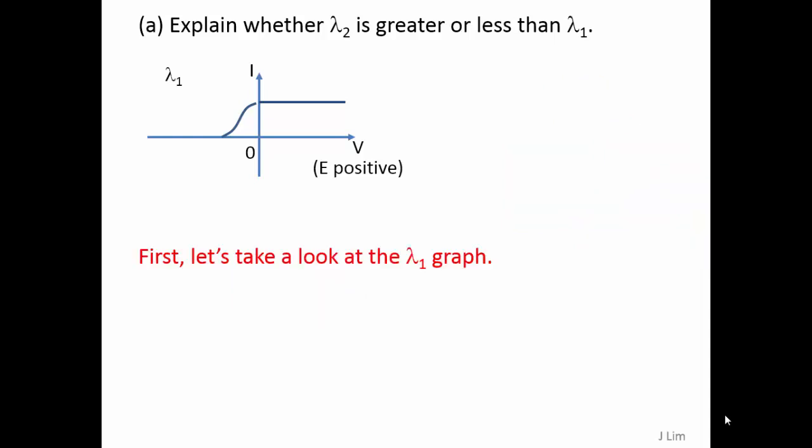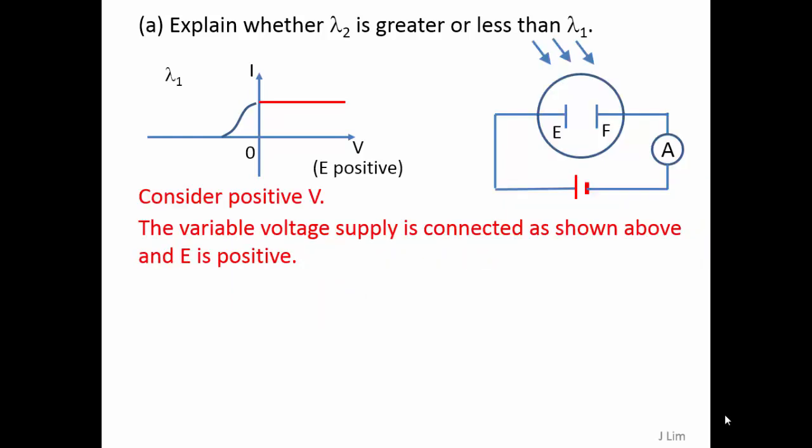First, let's take a look at the lambda 1 graph. Consider positive voltage in this region. The variable voltage supply is connected as shown above, so E is positive.